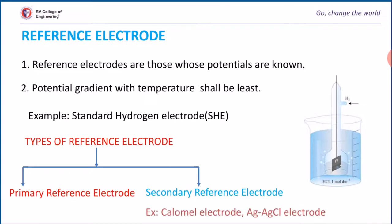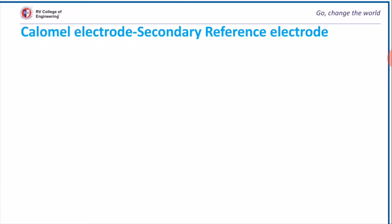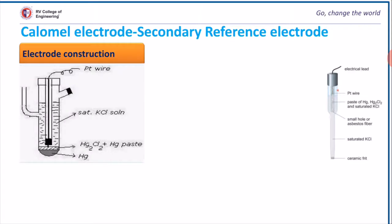Now we will discuss the calomel electrode and its construction. These are a few images related to the calomel electrode. The calomel electrode consists of a glass vessel containing a layer of mercury, above which a paste of mercury and mercurous chloride is placed. The rest of the glass vessel is filled with a known concentration of potassium chloride solution. A platinum wire is fused in a glass tube, which is used for electrical contact. The calomel electrode has two side tubes: one at the top used to fill KCl solution, and the other at the side connected to the salt bridge.